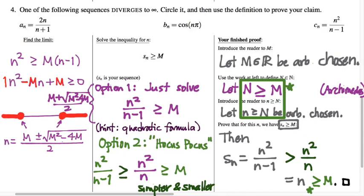This was called the direct comparison test. Now, you were using it at the time, not in relation to sequences, but in fact in relation to series, infinite series. But this is the same kind of reasoning that you had to do way back then.